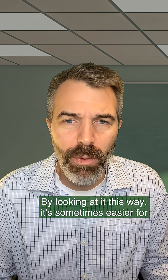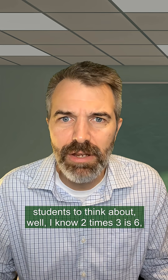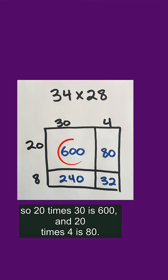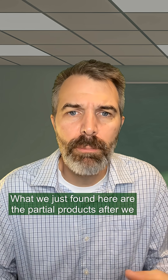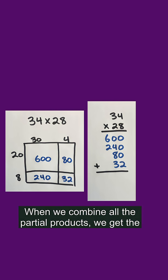By looking at it this way, it's sometimes easier for students to think about: I know 2 times 3 is 6, so 20 times 30 is 600. And 20 times 4 is 80. What we just found here are the partial products after we decompose the numbers.